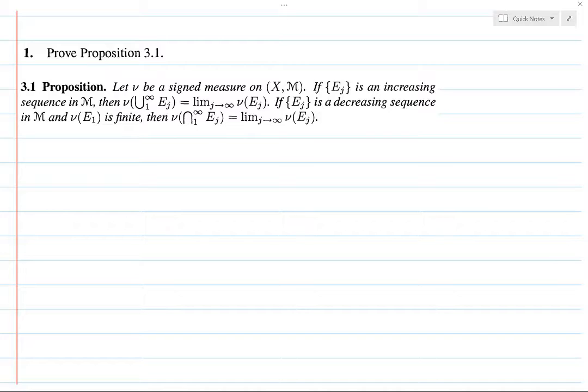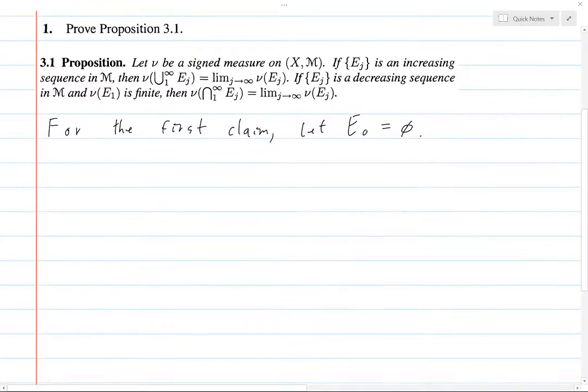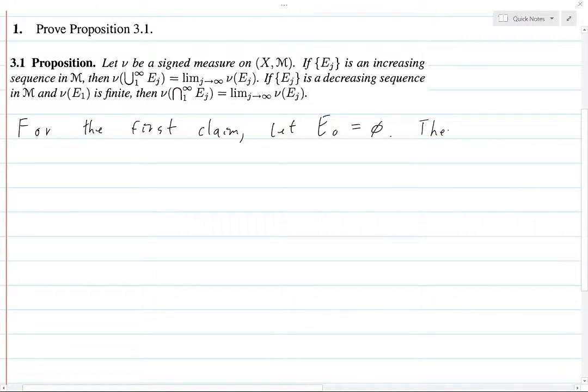So let's start. For the first claim, let's let E0 equal the empty set, just for convention. This will make some of our formulas easier. Then, by countable additivity, we have...